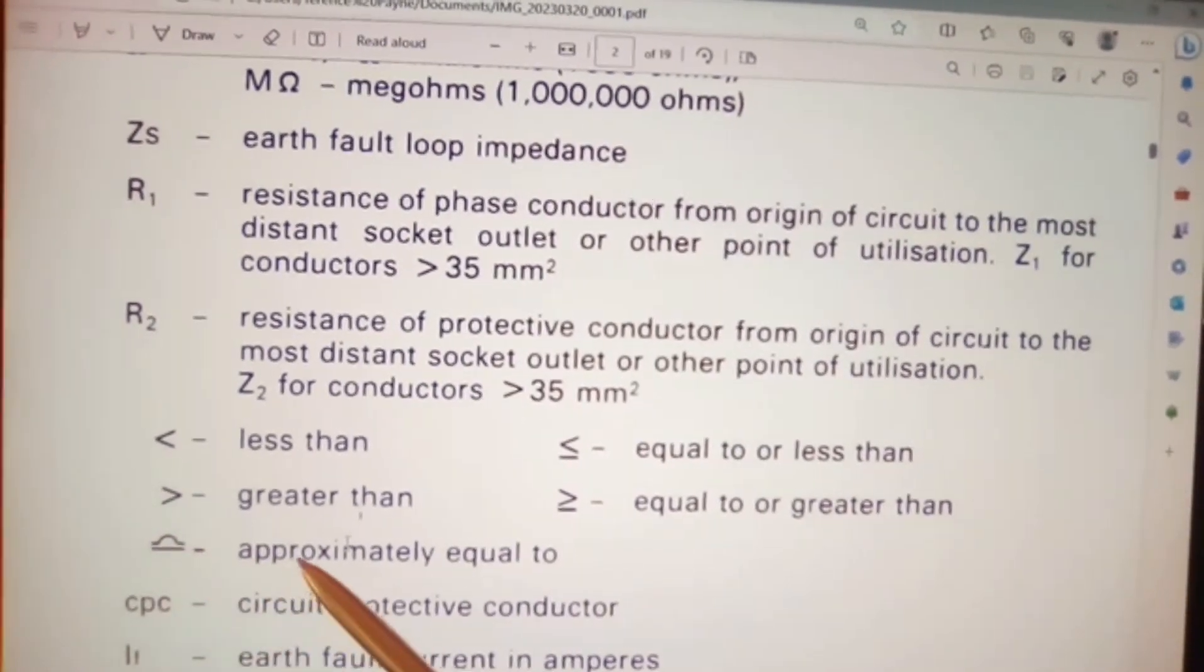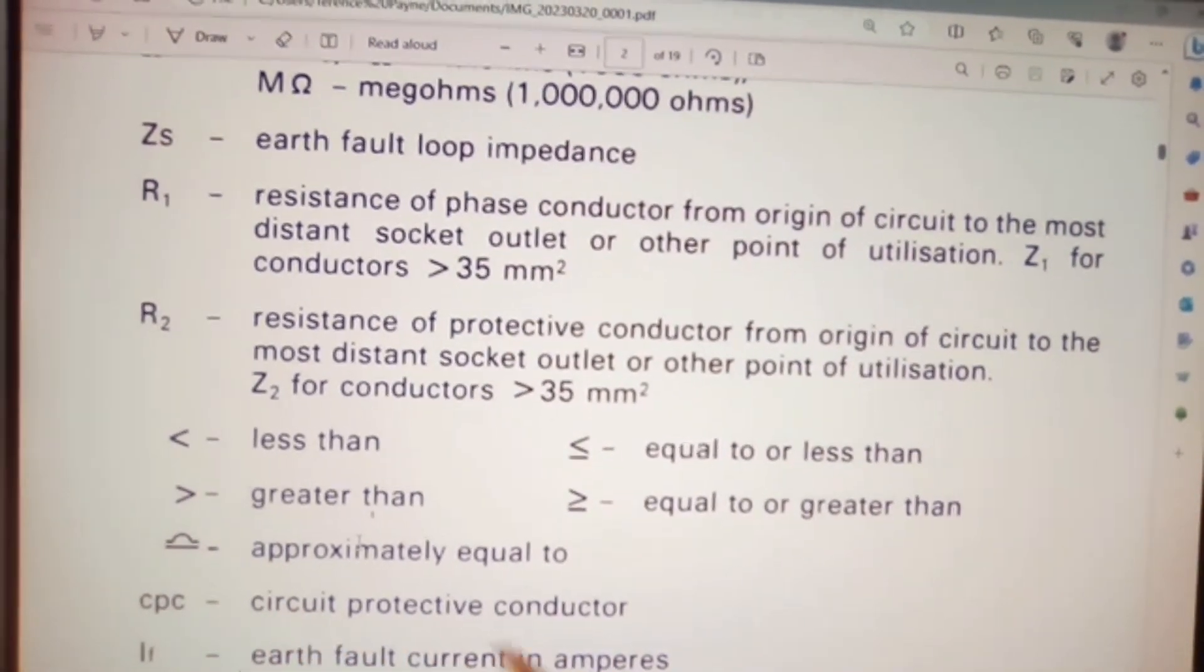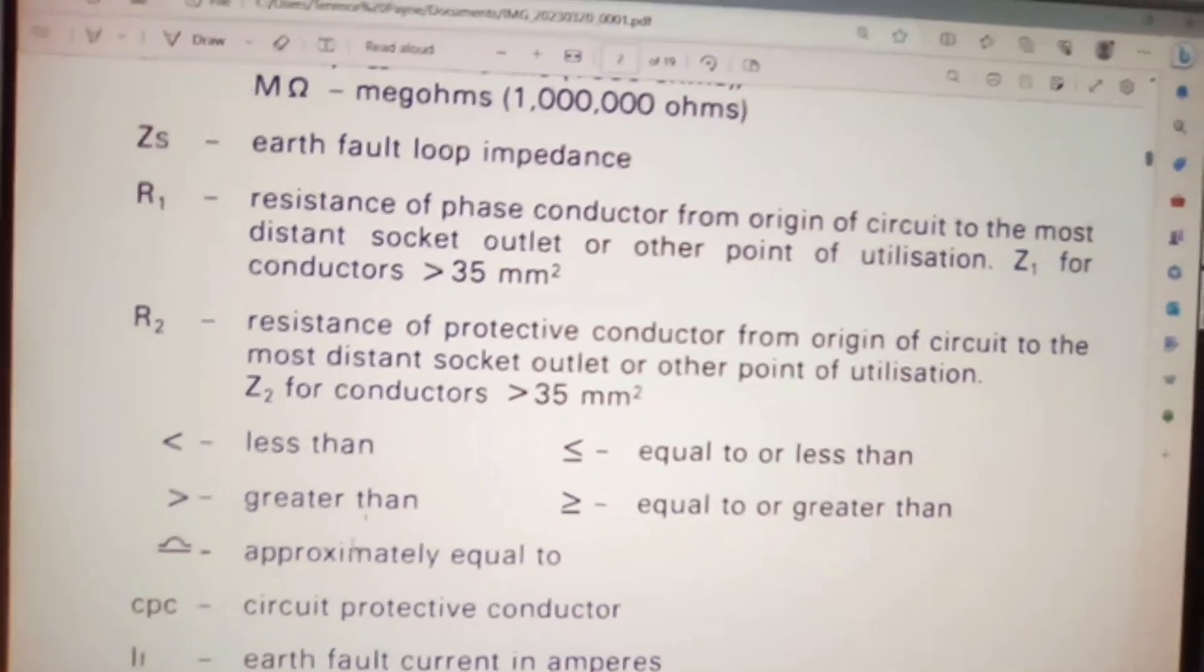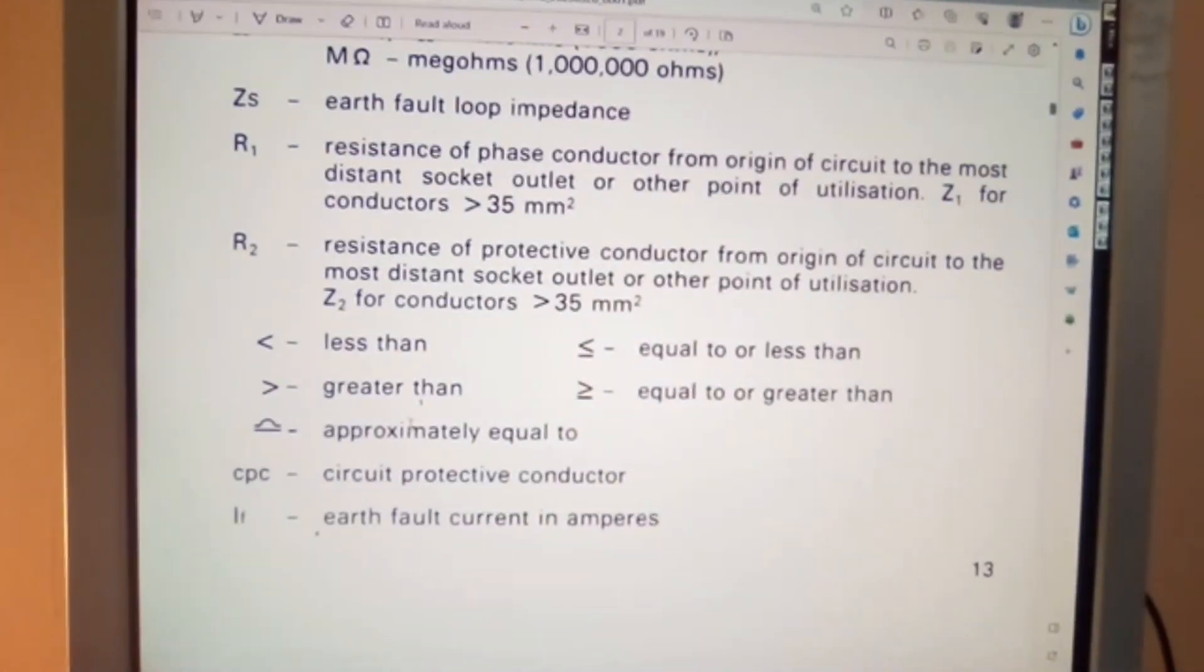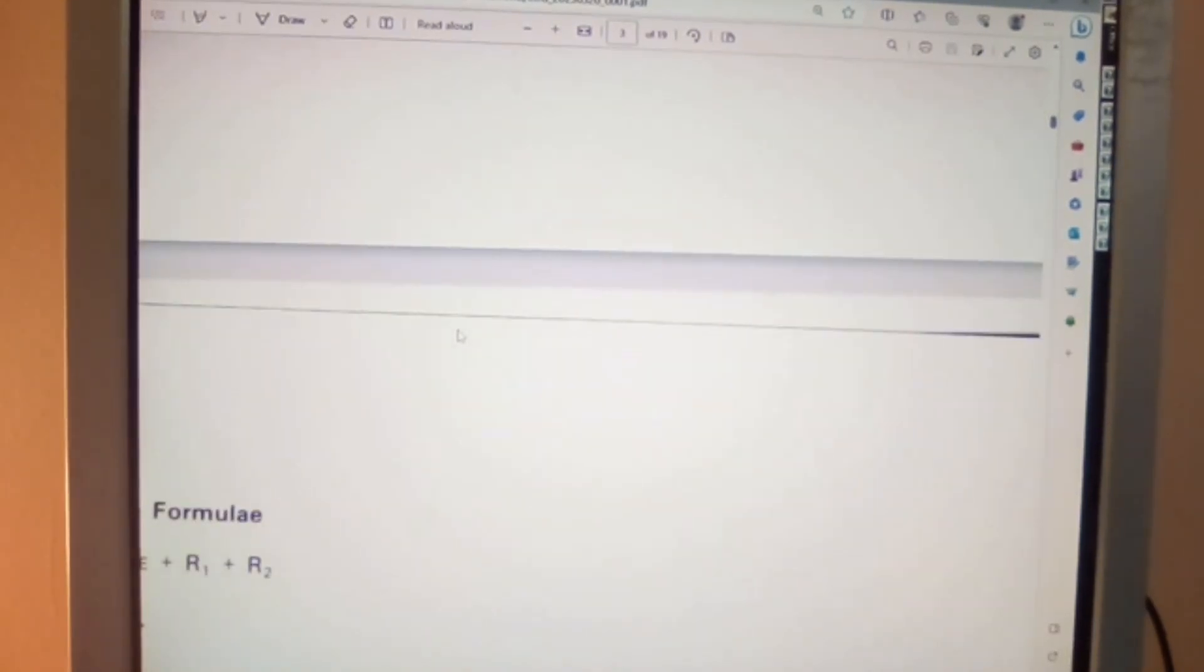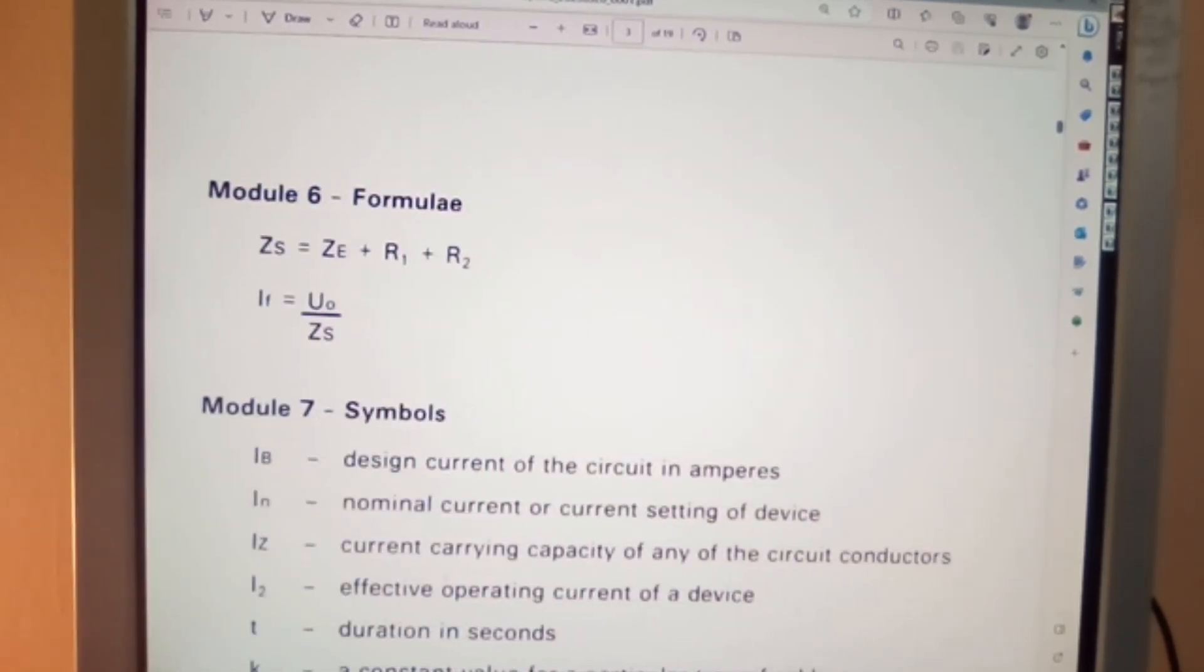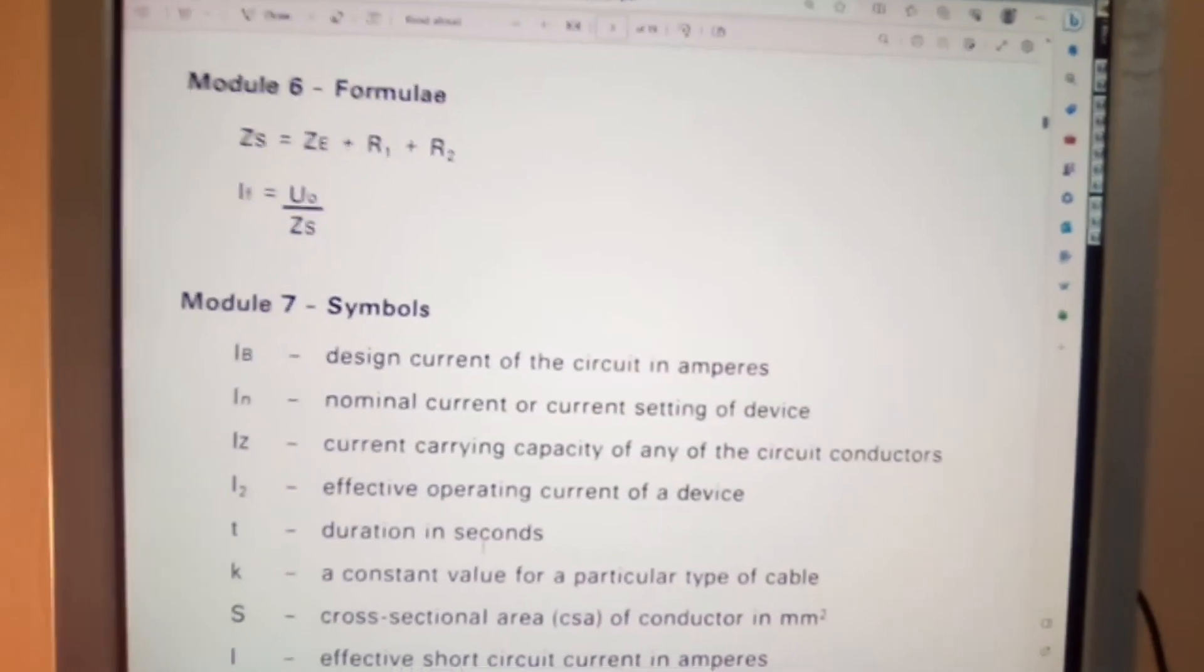Now this symbol here means approximately equal to. CPC, circuit protective conductor. IF for current in amperes. Let me adjust this to bring this back into view.